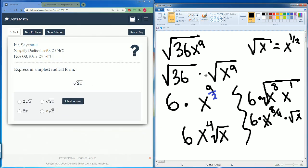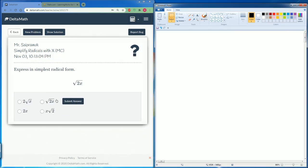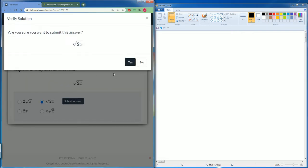Here we have radical 2x. This cannot be simplified. You cannot break down radical 2 or x, so that's just the answer.